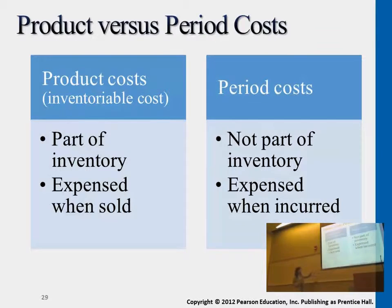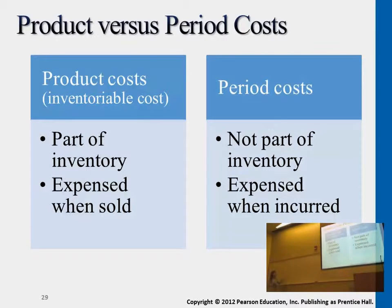Why? Because later on, we'll be introduced to the manufacturing company. It's a lot more complicated than a merchandising company. Inventory cost is not just a simple number of purchases, not just beginning inventory. Since manufacturing companies actually produce their products, they have a production line, so we actually have to go back to trace what's the material cost, what's the labor cost, what's the other indirect cost incurred.